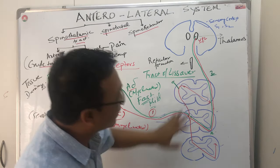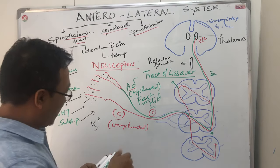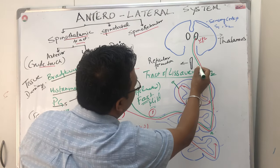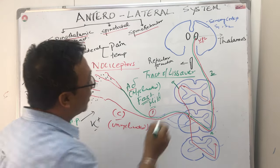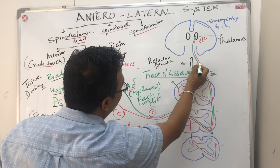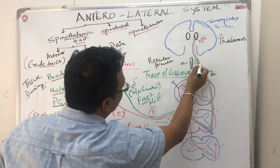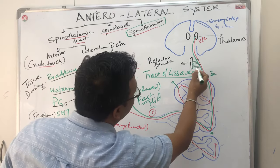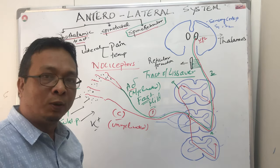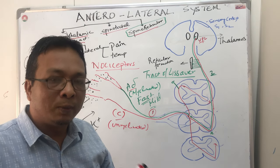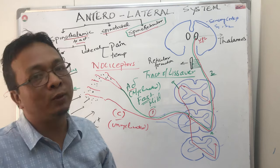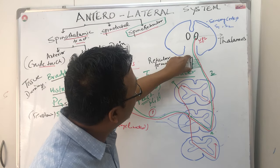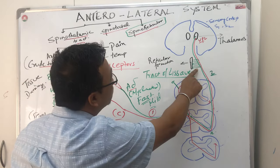In the second order neurons, a variety of things occur. About 80 to 85% of fibers in the anterior lateral system — the spinothalamic tract — give collaterals to the reticular formation. This is called the spinal reticular tract. This tract is important because whenever we have pain, we need to be awake and alert to focus and give full attention to the tissue damage. That is the role of the spinal reticular fibers.